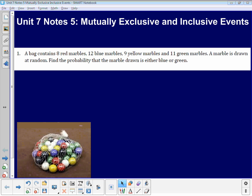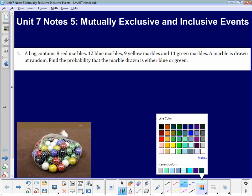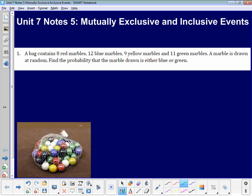Let's start with our example at the top. We have a bag of 8 red marbles, 12 blue, 9 yellow, and 11 green marbles. We're supposed to find the probability that either a blue or a green marble is chosen. First thing I need to know is how many marbles are there total. 8 plus 12 plus 9 plus 11, that's 40 marbles total.